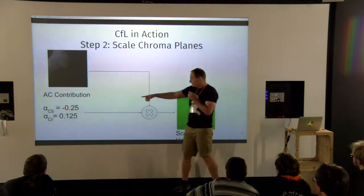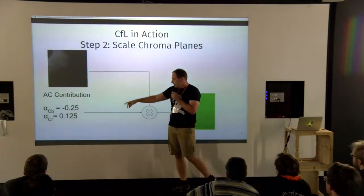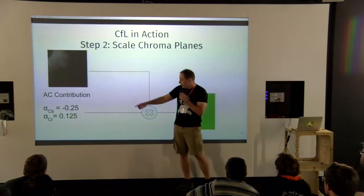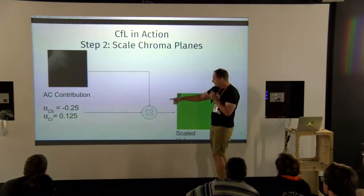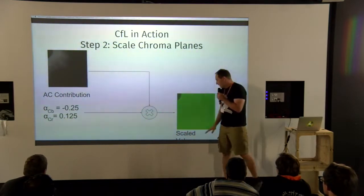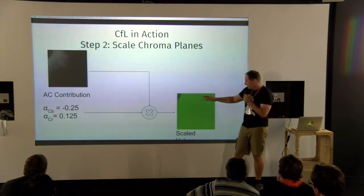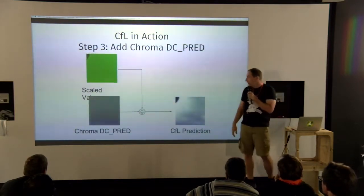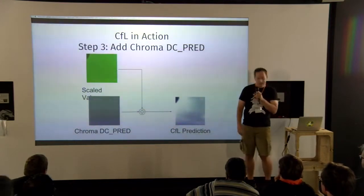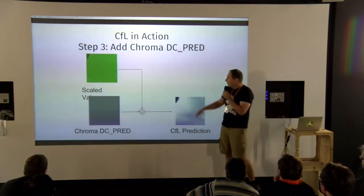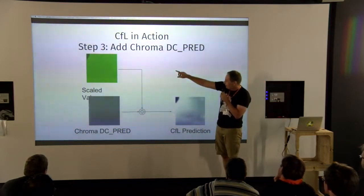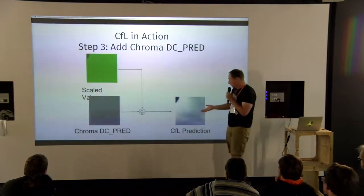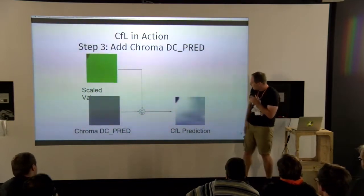In the next step, we decode the parameters we signaled inside the bitstream — one for each plane — and multiply them. That gives us the scaled chroma contribution. Then in the final step, you take that scaling and add it to the original chroma DCPred, and voilà — CFL. That's what both the encoder and decoder do.